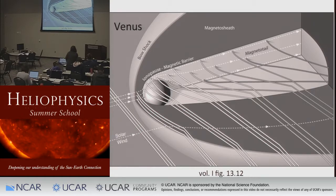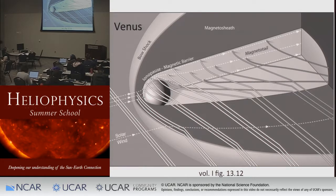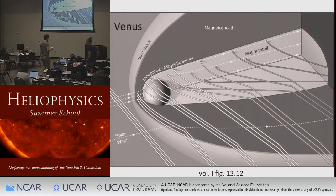Part of understanding the magnetosphere is understanding how the solar wind squishes up against it and forms it. Going through the same exercise, we'll find that what you need to create this bow shock is a magnetic pressure — B² over 8π in CGS units — that is capable of stopping the solar wind.